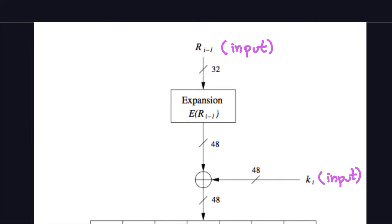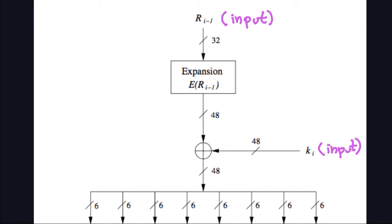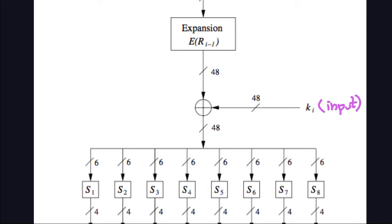Hello and welcome again. In the previous video we were discussing the S-boxes of the F function. Remember what we had in the F function was the right-hand side of the previous block of 64 bits, which takes in 32 bits because it's the right-hand side divided by 2. We also saw the expansion permutation and how it works using a table, expanding those 32 bits into 48 bits.